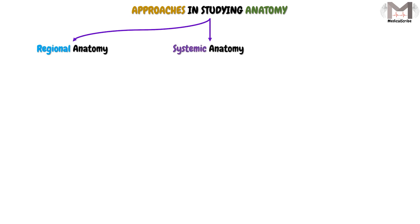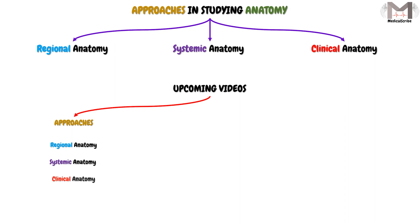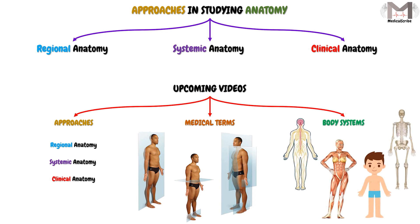Now we come to a very important issue: how will we study anatomy, and what approaches are there? There are three approaches: regional anatomy, systemic anatomy, and clinical anatomy. Each approach has its own details, and in upcoming videos we will discuss these approaches and how they look at the human body. After that, we will talk about the medical terms related to anatomy, and finally we will cover the body systems in a simple way from an anatomical point of view.